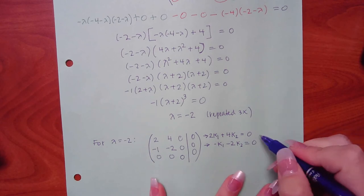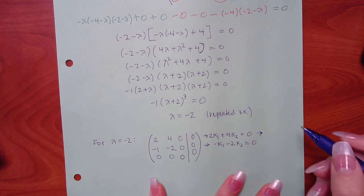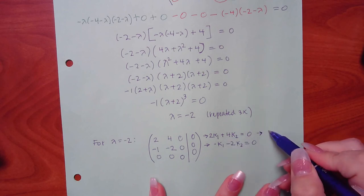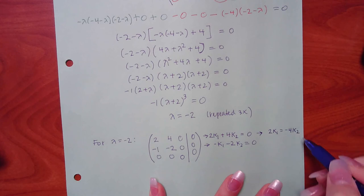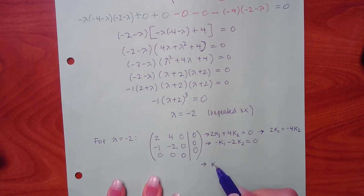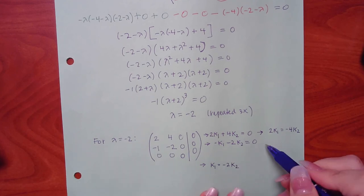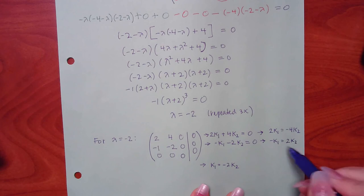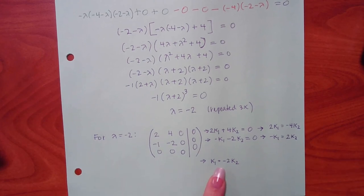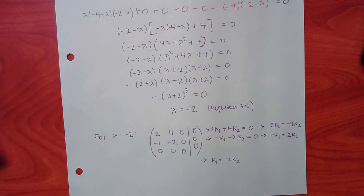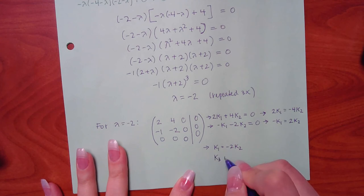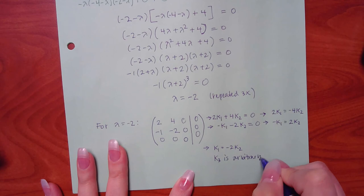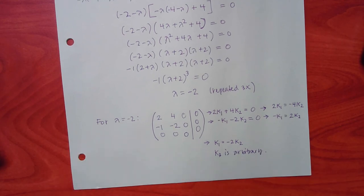Since k3 doesn't appear in either equation, k3 is completely arbitrary — we can set it to whatever we want. Meanwhile, k2 is also going to be a kind of arbitrary variable. From the first equation: 2 k1 equals negative 4 k2, so k1 equals negative 2 k2.